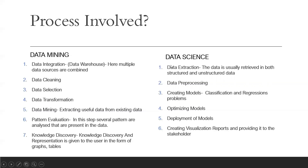Now in data science, the steps are: data extraction, data pre-processing, creating models, optimizing the model, deployment of the model, and creating visualized reports. Data cleaning, data selection, and data transformation are all part of data pre-processing. When creating models, we use machine learning algorithms — both supervised and unsupervised — to solve classification and regression problems using algorithms like logistic regression, decision tree, random forest, and many more.